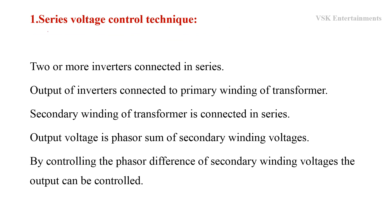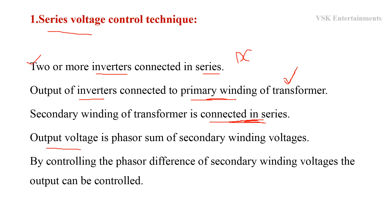Coming to the first method — the series voltage control technique. In this technique, two or more inverters are connected in series, supplied by the DC input voltage. The outputs of these inverters are connected to the primary winding of a transformer, and the secondary windings of this transformer are connected in series. The output voltage is the phasor sum of the secondary winding voltages, and by controlling the phasor difference of these secondary winding voltages, we can get the controlled output voltage.